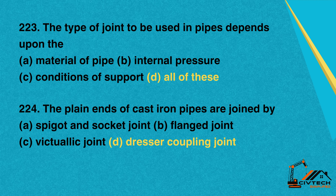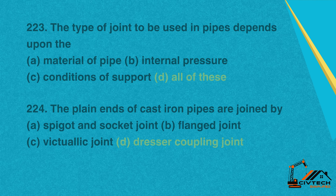Question 224: The plain ends of cast iron pipes are joined by. A. Spigot and socket joint. B. Flange joint. C. Victolic joint. D. Dresser coupling joint. Correct option: D. Dresser coupling joint.